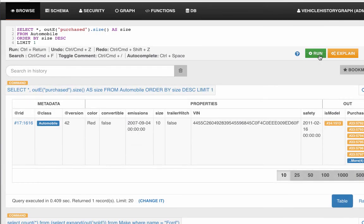And we see that the vehicle that was purchased the most number of times is red. It's not a convertible. The size is right here. It was purchased 10 times. And there's the VIN number.